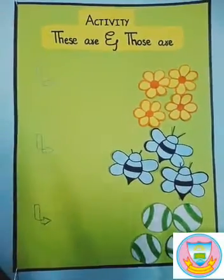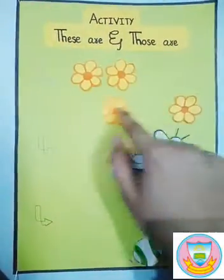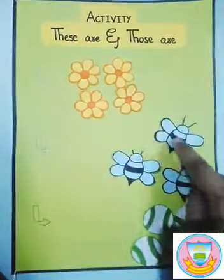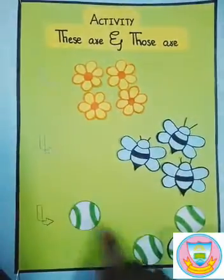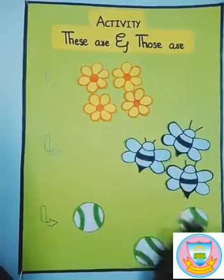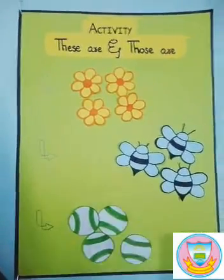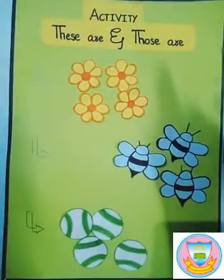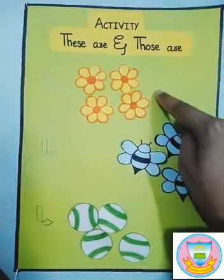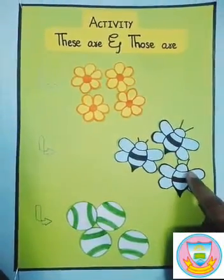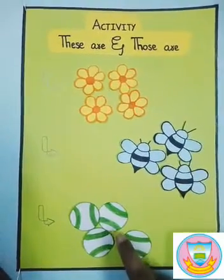Now practice it with me. If flowers are near, bees are far, and bowls are near, then what do we say? These are flowers, those are bees, these are bowls.